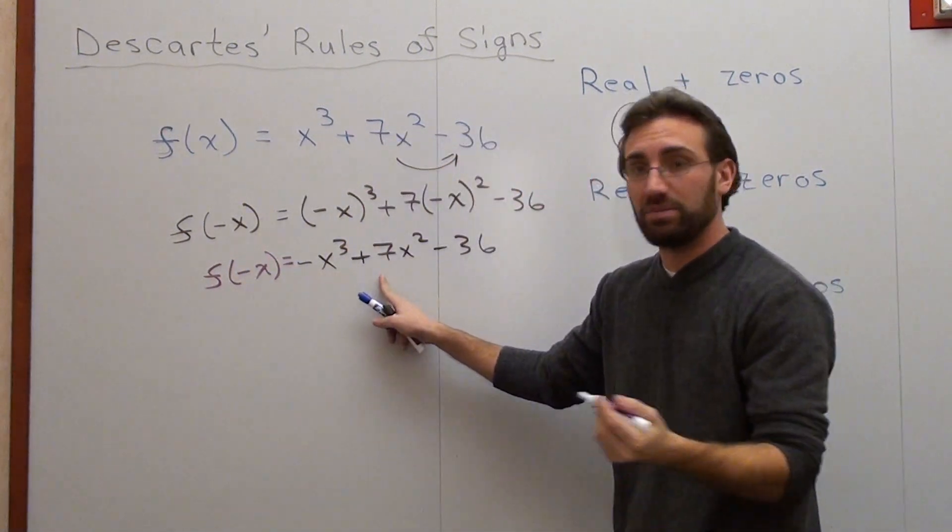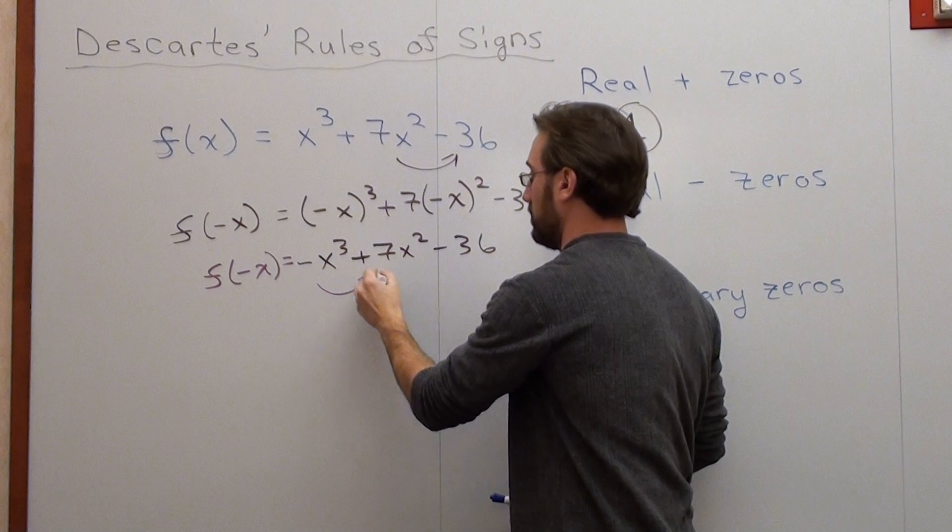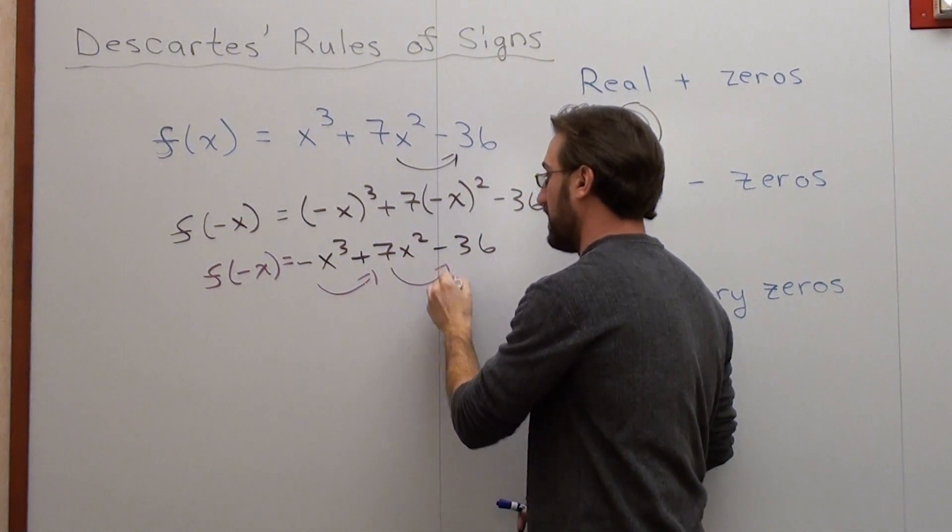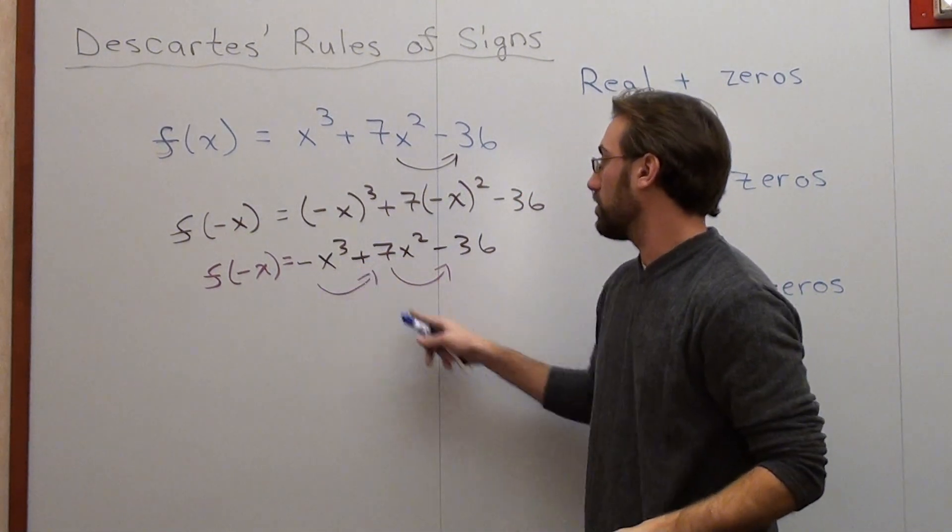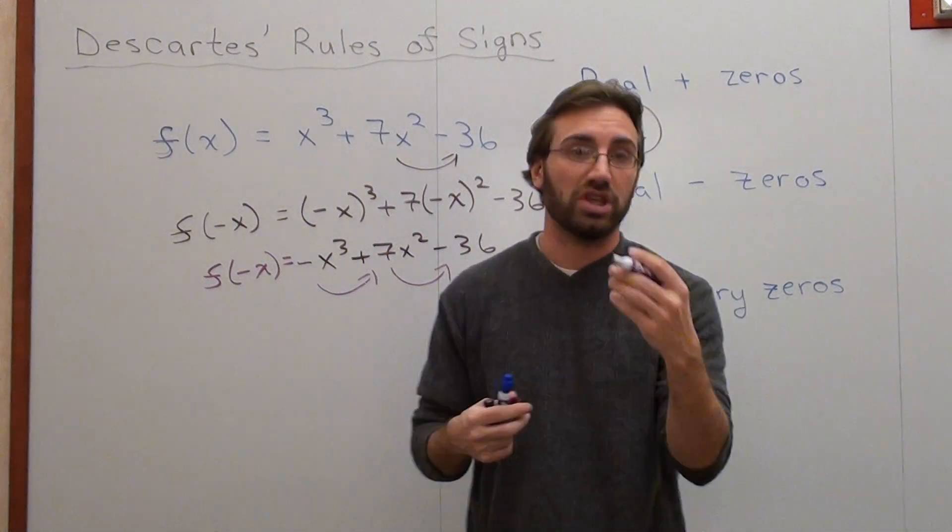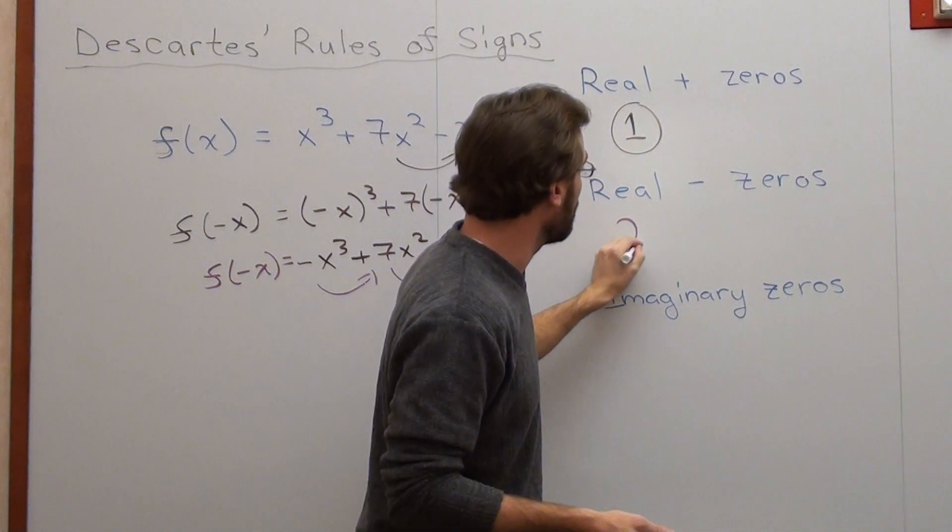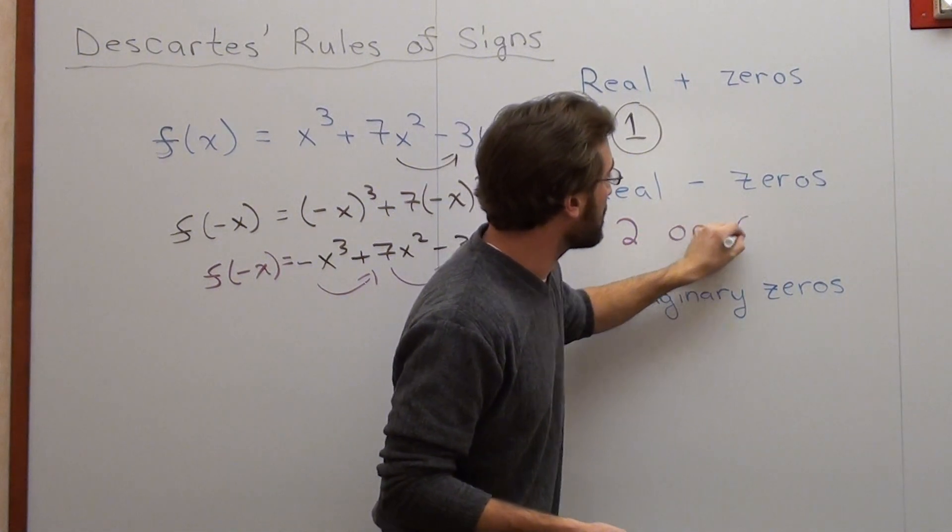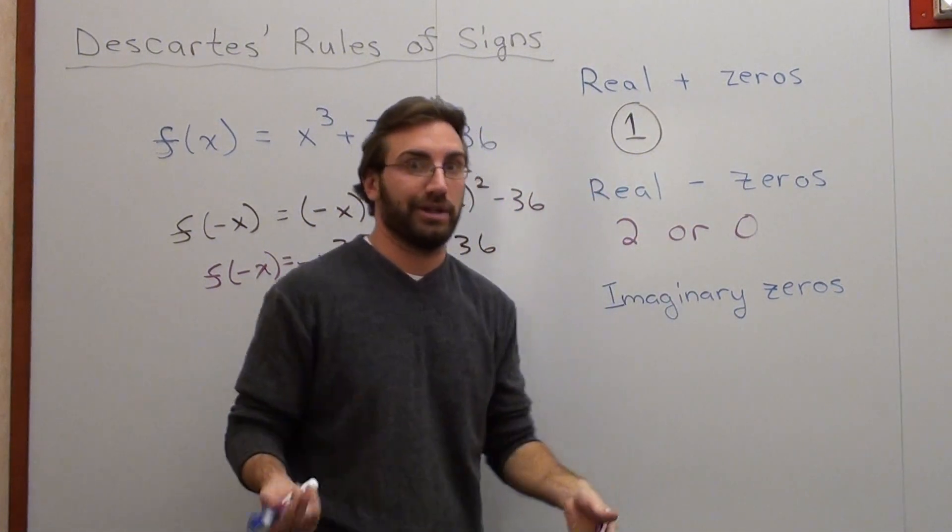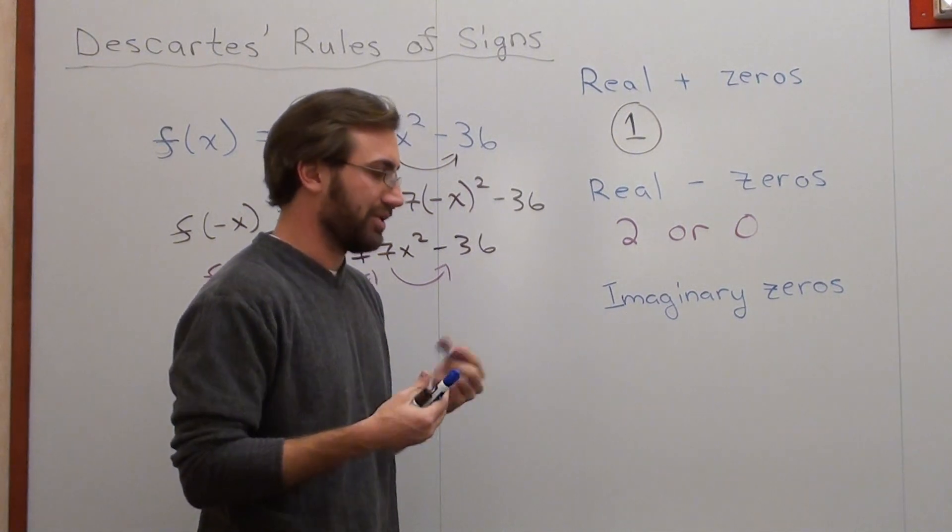In this case, it goes from negative to positive and from positive to negative. So there's one, two sign changes there. The answer for real negative zeros could be two or zero. I don't really know which one it is out of curiosity, but we'll see how it goes.